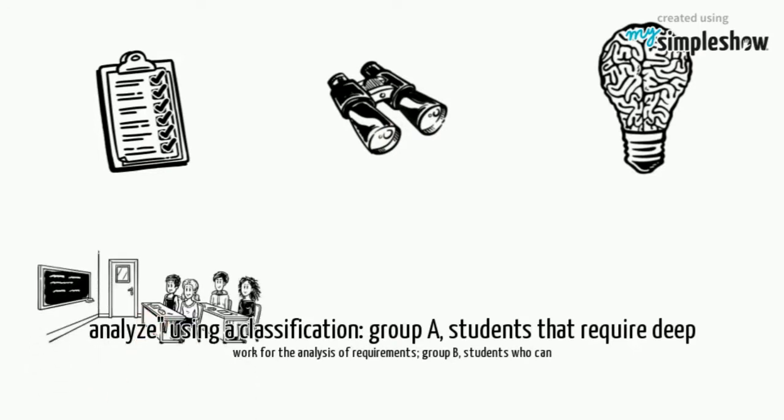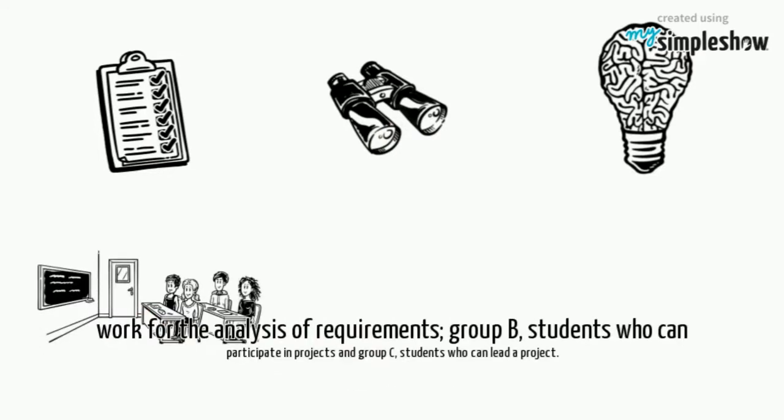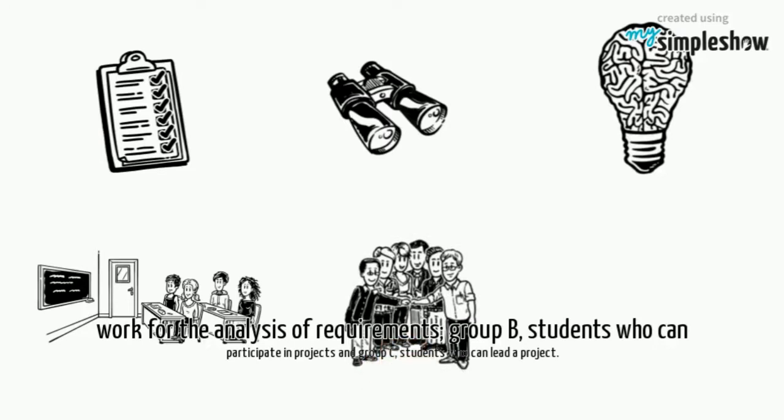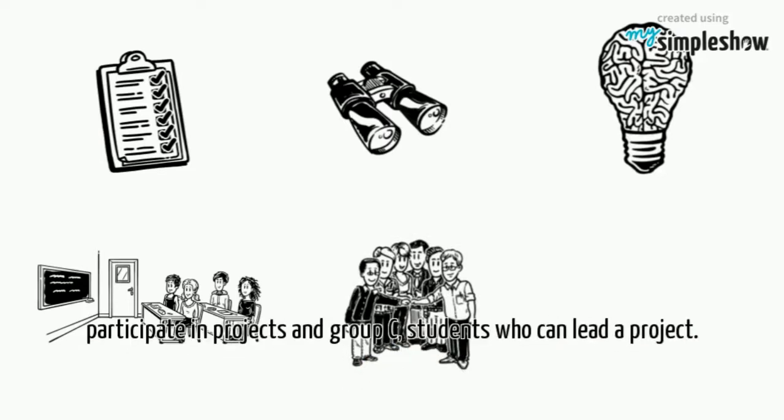The weights of each question allow us to identify the lack of skills to analyze using a classification. Group A: students that require deep work for the analysis of requirements. Group B: students who can participate in projects. Group C: students who can lead a project.